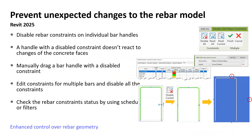In Revit 2025, you can disable rebar constraints on individual bar handles to block modifications of bars when the concrete geometry changes. You can disable all handles, reset the current, or reset all handles. Once the constraint is disabled for the selected bar handle, that handle will not react to changes of the concrete faces, but you can still manually drag a bar handle with the disabled constraint. You can edit constraints for multiple bars and check the rebar constraint status using schedules or filters. This feature gives you enhanced control over rebars, preventing unexpected rebar changes when concrete geometry changes.